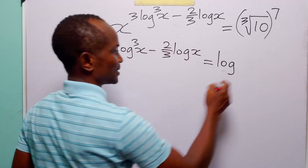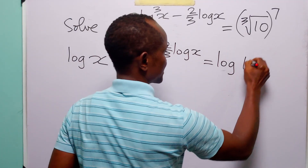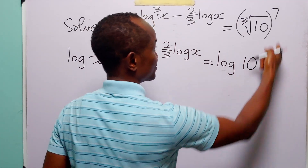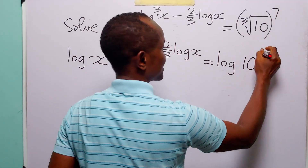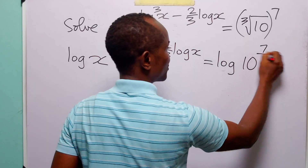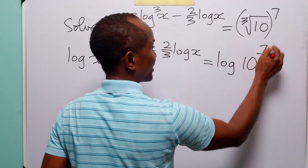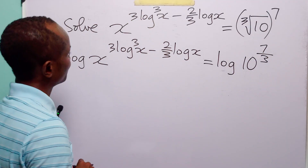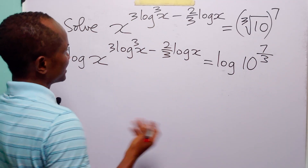Now, you know that we can write the cube root of 10 to the power 7 as log 10 to the power 7 divided by 3.